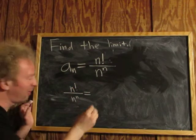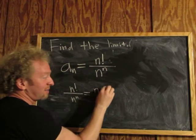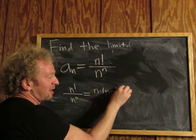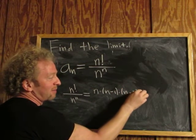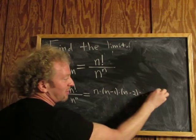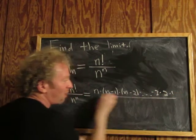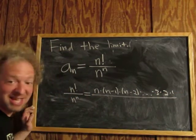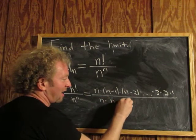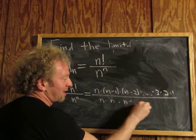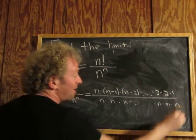What is n factorial? n factorial is n times (n minus 1) times (n minus 2) times dot dot dot times 3, 2, 1. What's n to the n? n to the n is n times n times n times n times n times n times n times n.